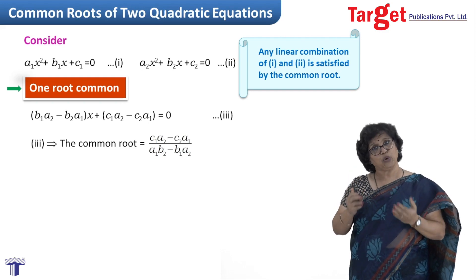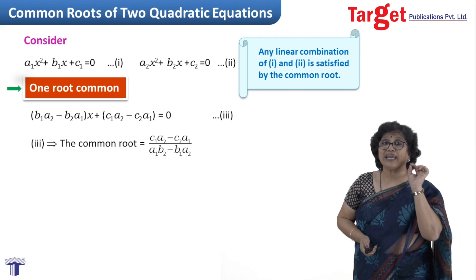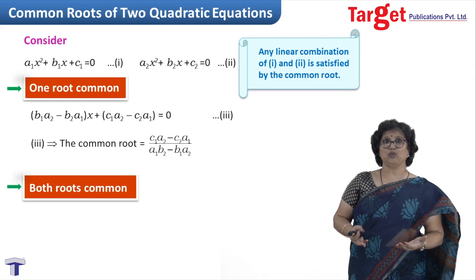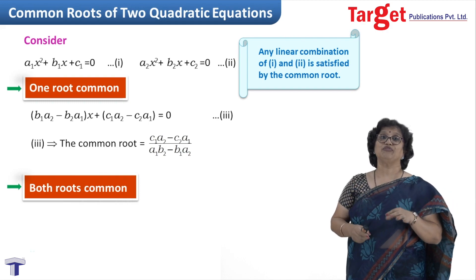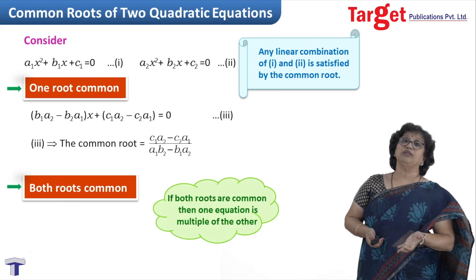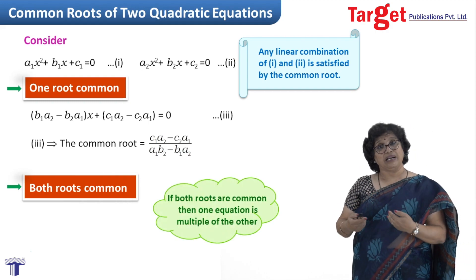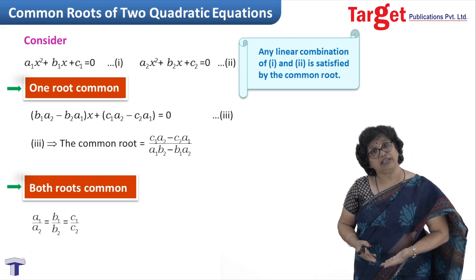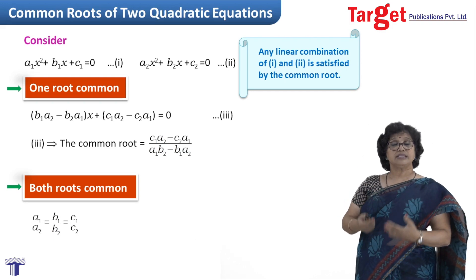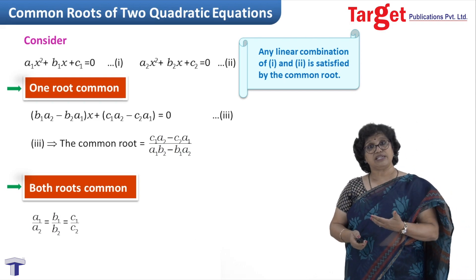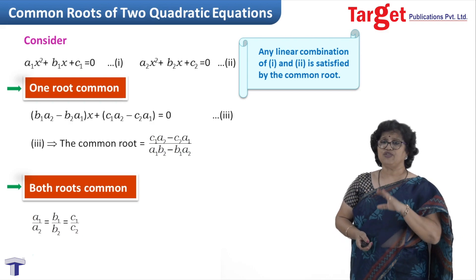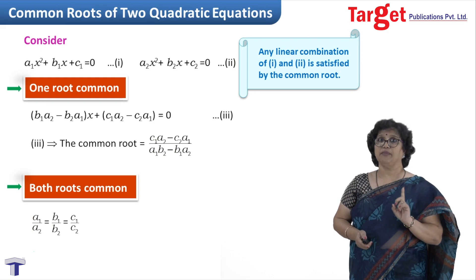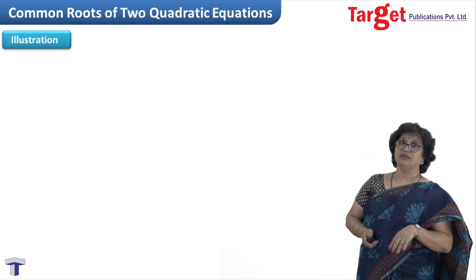Can there be a case where both roots are common? If that is the case, then one equation must be a multiple of the other, meaning a1/a2 = b1/b2 = c1/c2. That is what I mean by one equation being a multiple of the other. Generally this second case is not asked; the first case — one common root — is the important one. Let us take an example to make things clearer.